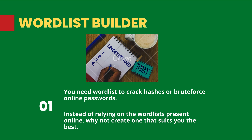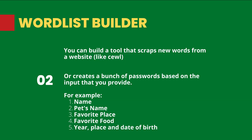The next project is a wordlist generator. Once an attacker has hashes, they need to crack them, and for that they need word lists. You can either use an existing word list hosted on GitHub or another website, or you can create your own tool — similar to CeWL on Linux — that scrapes unique words from a website. Alternatively, you can generate passwords based on user inputs like name, pet names, favorite food, place, year, and date of birth.